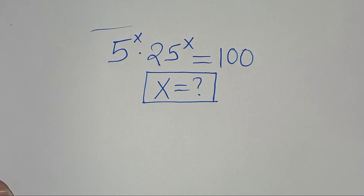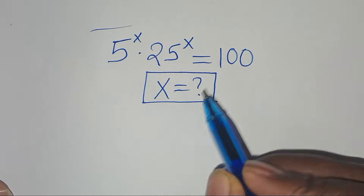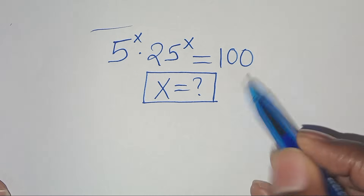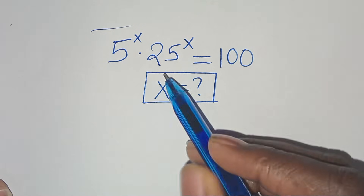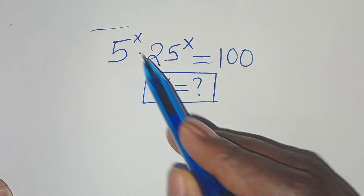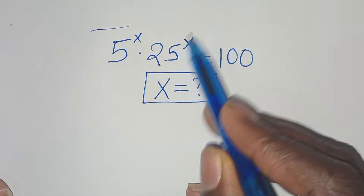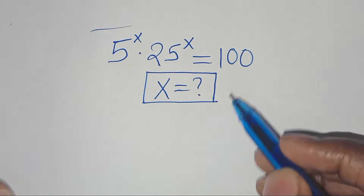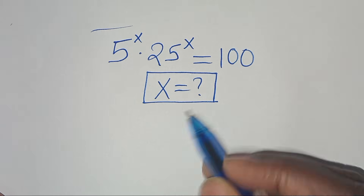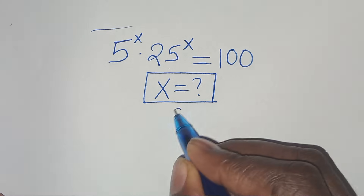Hello everyone, welcome to this exponential question: 5 to the power of x multiplied by 25 to the power of x equals 100. What is the value of x?